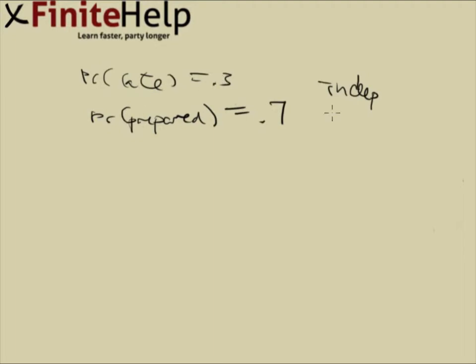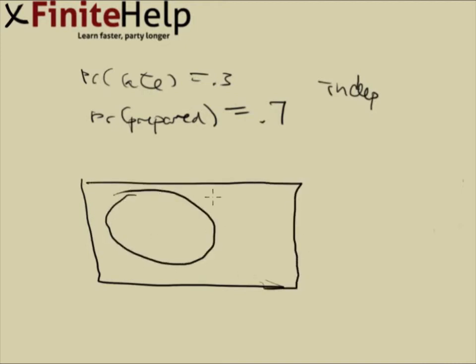These are independent events, meaning that the probability of the intersection is going to be the product. That's practically the only thing that independent could mean.